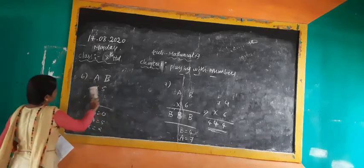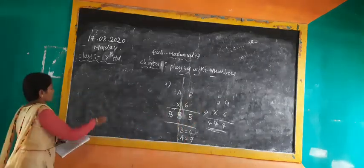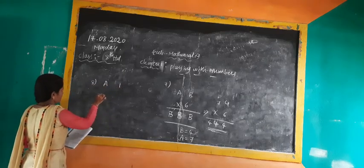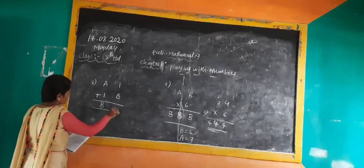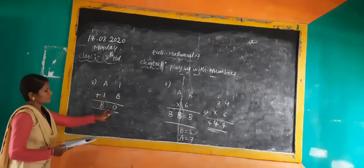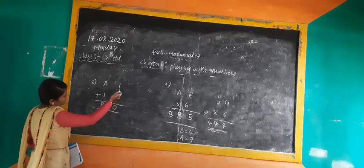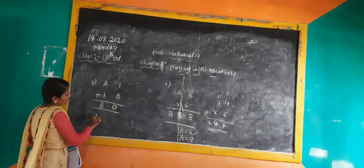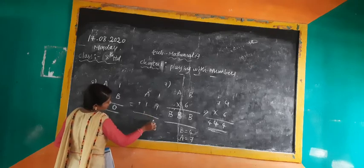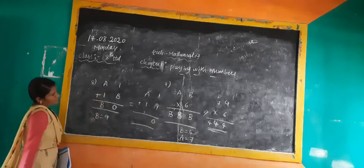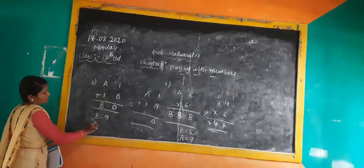Next, 8th problem. A, 1 plus 1 — here there is a plus sign. Here they are giving B, and here 0. In order to get 0 here, I need B value the same. To get a units digit of 0 means 10, 20, 30 — that's why I am taking B value should be 9. If I take 9, A plus 1 plus 9 — I take a carry, it gives 10, and I get 0 here. So B value is 9. Then A value should be 7.